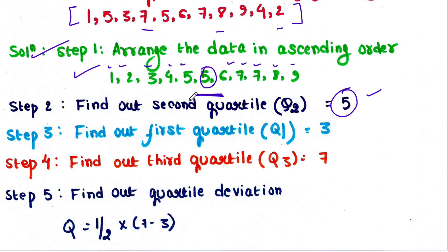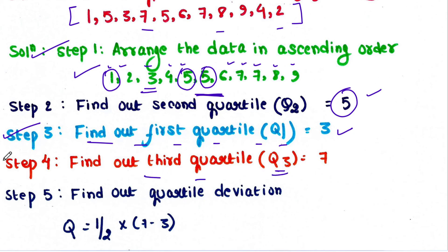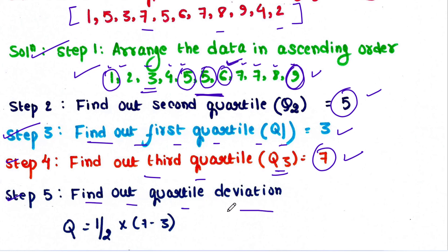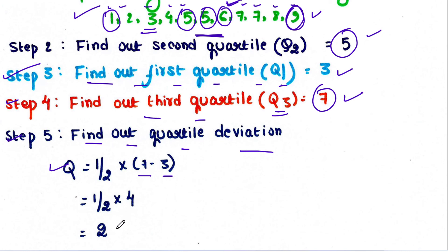Step 3: find the first quartile Q1, which is the value present between the lowest number (1) and the median (5). Here Q1 is 3. Then find the third quartile Q3, which is present between the median and the highest number (9) — Q3 is 7. Step 5: apply the formula — Quartile Deviation = half of (Q3 minus Q1) = half of (7 minus 3) = half of 4 = 2. So the quartile deviation is 2.